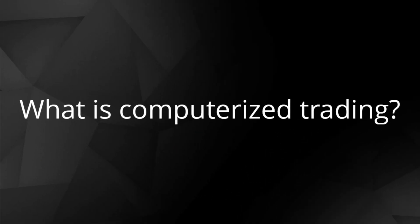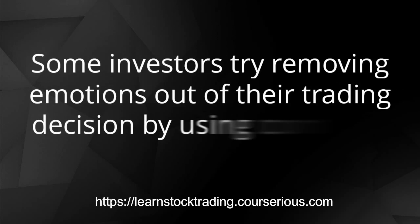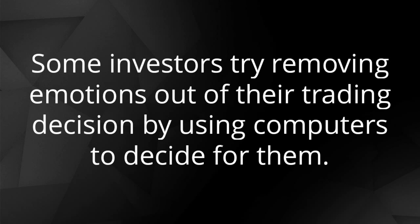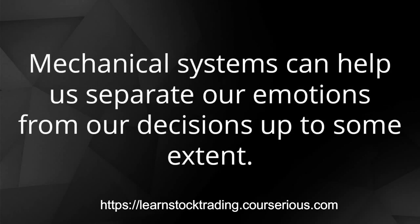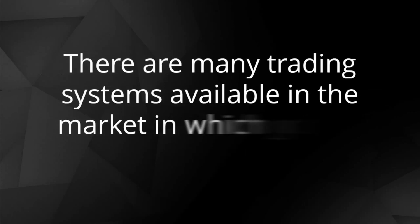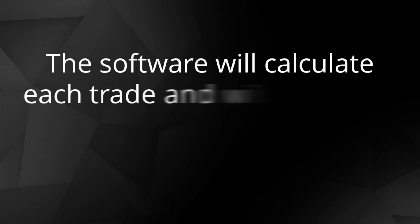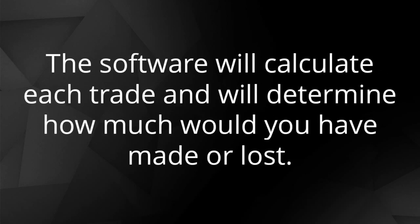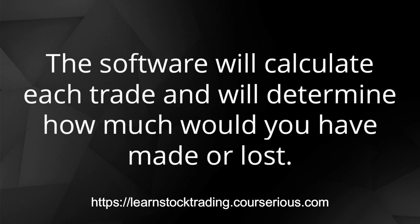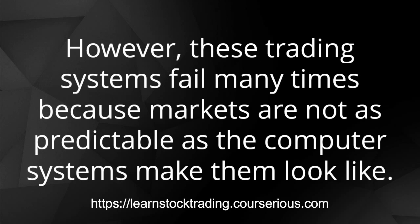What is computerized trading? Our decisions are based on our emotions. Some investors try removing emotions out of their trading decisions by using computers to decide for them. Mechanical systems can help us separate our emotions from our decisions to some extent. There are many trading systems available in the market in which you can specify buy and sell rules. The software will calculate each trade and determine how much you would have made or lost. However, these trading systems fail many times because markets are not as predictable as the computer systems make them look.